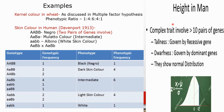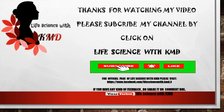Another example is height in man, which is a complex trait involving 10 pairs of genes. Tallness is governed by recessive genes and dwarfness by dominant genes. Height shows a normal distribution in the human community.